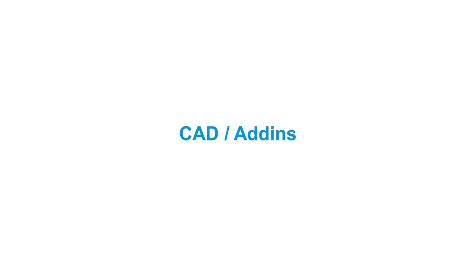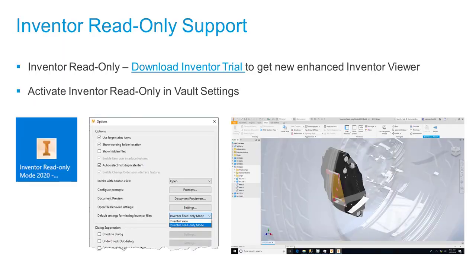The first topic is CAD and add-ins. With version 2020, Inventor introduces a read-only version of Inventor. It has enhanced capabilities for viewing and leverages measuring capabilities from Inventor directly. You can also use it from Vault. In Vault options, you can change the usage to read-only mode instead of Inventor View. The Inventor read-only version is usable without a license — you can leverage this by downloading the trial and installing in read-only mode.